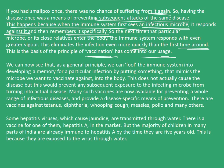This is the basis of the principle of vaccination. As a general principle, we can literally fool the immune system into developing a memory for a particular infection by putting something that mimics the microbe we want to vaccinate against into our body. This does not actually cause the disease, but it would prevent any subsequent exposure to the infecting microbe from turning into actual disease. Many such vaccines are now available for preventing a whole range of infectious diseases, providing a disease-specific means of prevention.